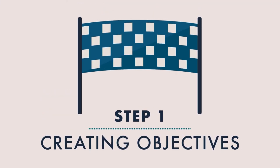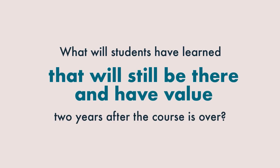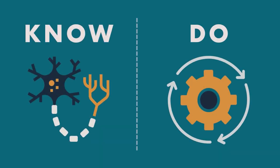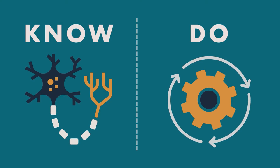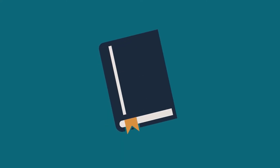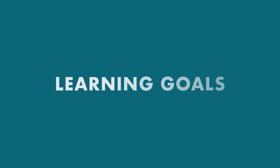The first step in backward design is creating objectives. It's imagining a time when the course is over, and then asking: what is it I hope that students will have learned that will still be there and have value two years after the course is over? Your learners are long gone — what do you want them to still know and be able to do from your course? This is your vision for the course, where you dream beyond the 16 weeks of the semester. Think bigger than your content.